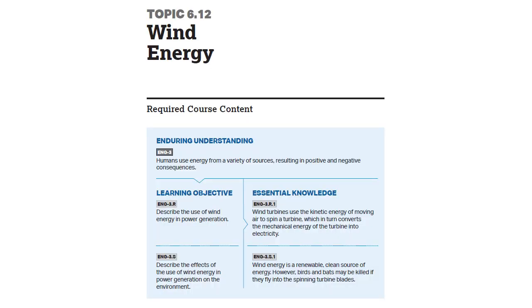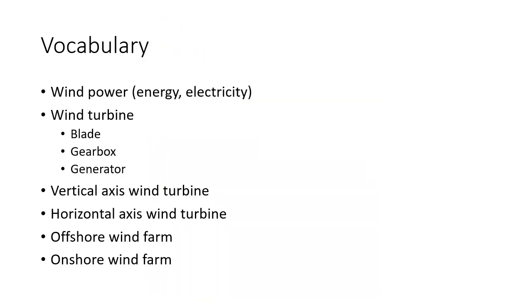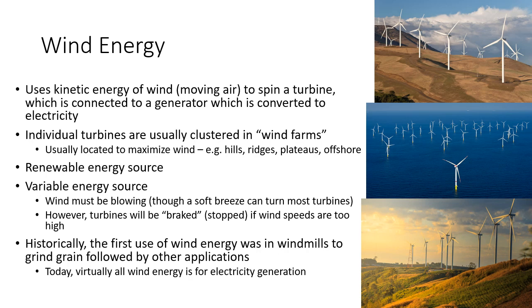Alright class, let's talk about wind energy. This is one learning objective that is just focusing on wind — the vocab. Wind energy is pretty straightforward. You essentially just use the power of the wind to spin a turbine. That moving fluid, just like any of the other moving fluids we've talked about, moves over a turbine, and those turbines are hooked to generators which generate electricity.